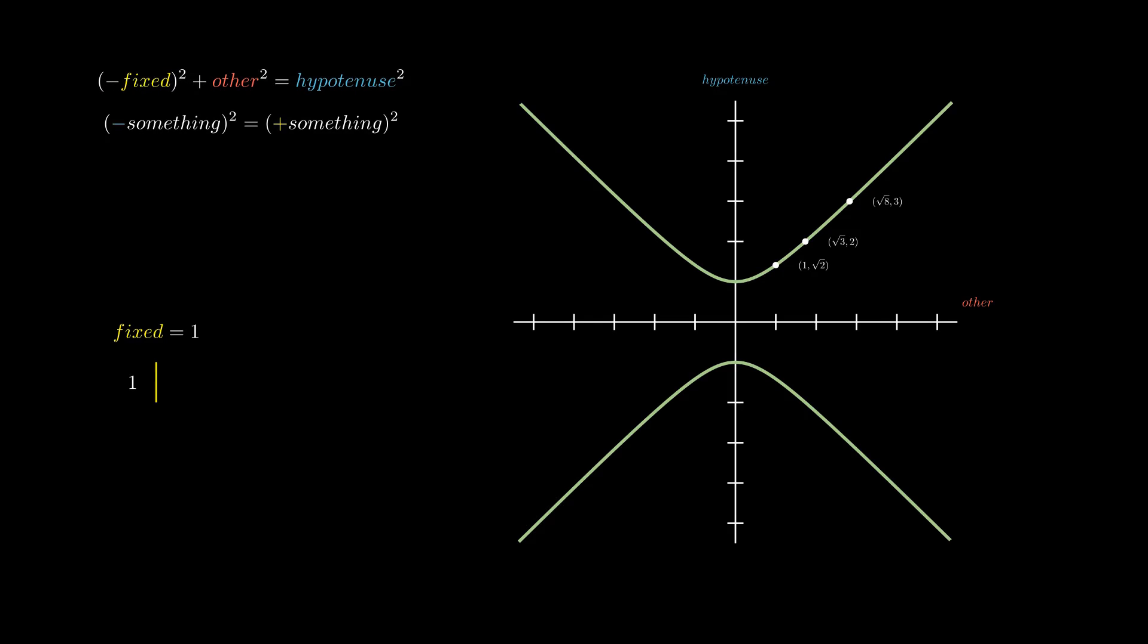For example, negative 3 squared is the same as positive 3 squared. Thus, any of our points can be reflected across either axis. These symmetrical points also satisfy our equation.